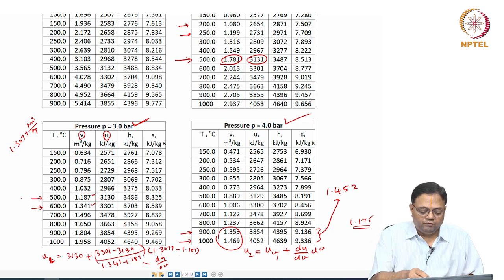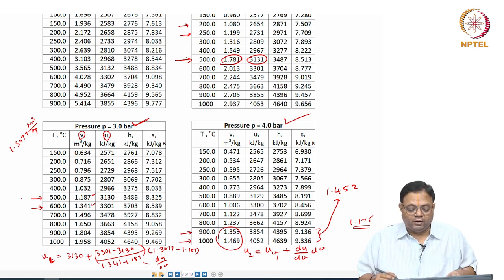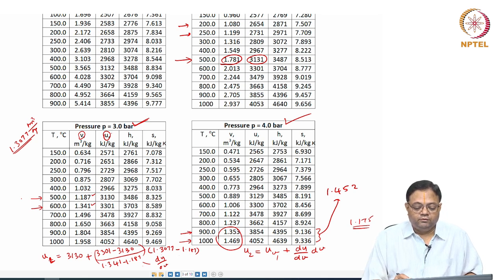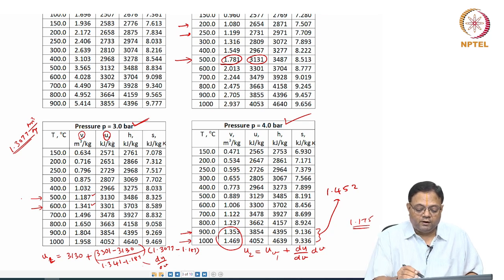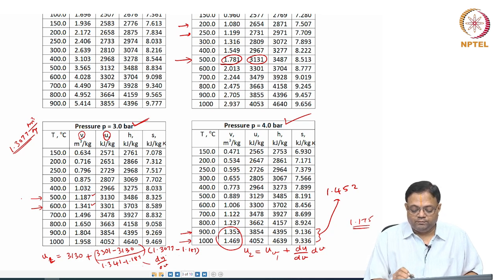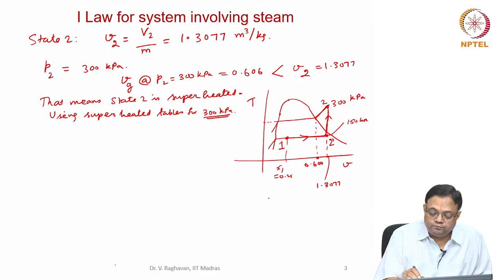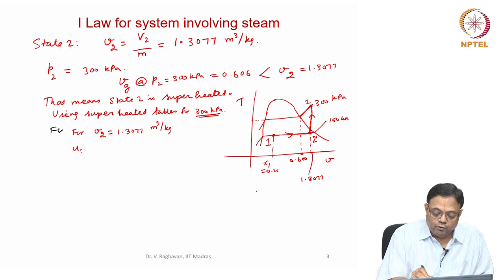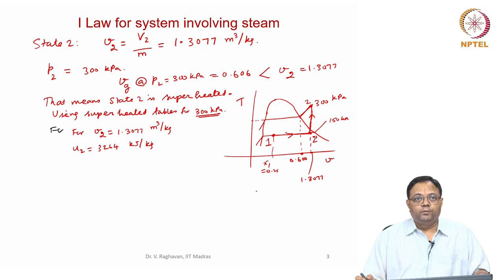The table has entries for 50°C temperature intervals, but this approach is sufficient to understand how to use the tables. For state 2 with v2 = 1.3077 m³/kg at 3 bar, linear interpolation from the superheated tables gives U2 = 3264 kJ/kg.